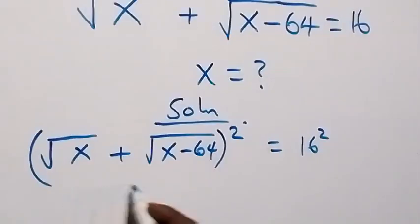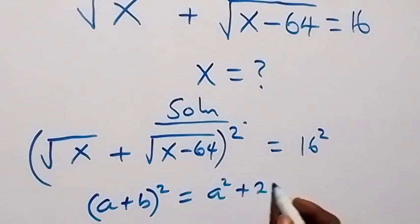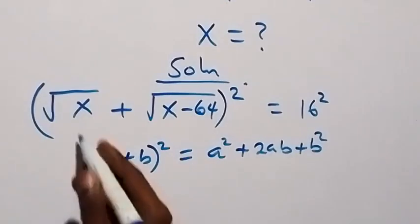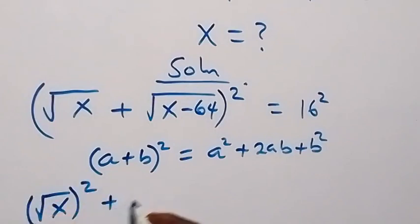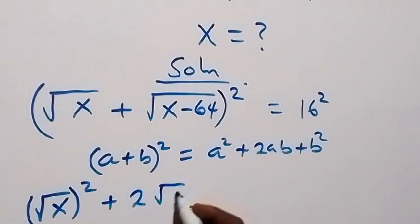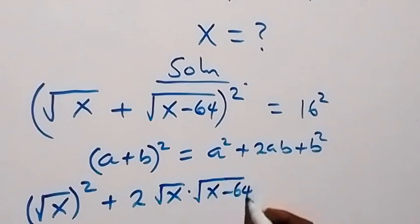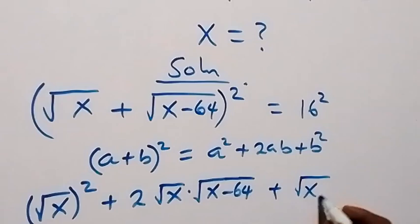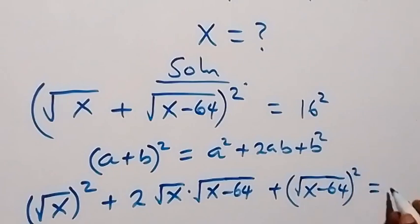Then from here, this expression follows when we have (a + b)², which gives us a² + 2ab + b². So here a is √x, meaning a² is x, then plus 2 times √x times √(x−64), then plus b² where b is √(x−64), all squared, which equals 16².